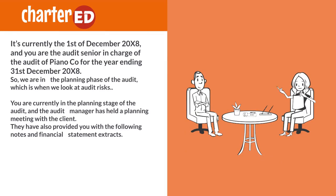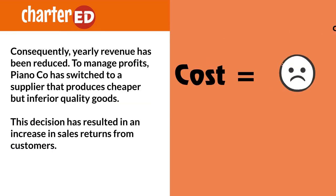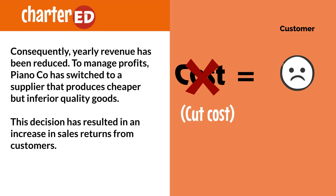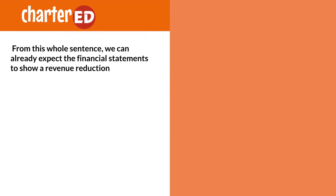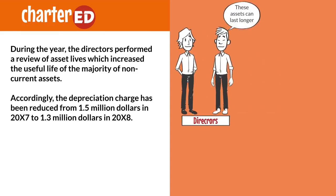This year the economy has affected Piano Co significantly, resulting in reduced sales prices. Consequently, yearly revenue has been reduced. To manage profits, Piano Co has switched to a supplier that produces cheaper but inferior quality goods. This decision has resulted in an increase in sales returns from customers. From this, we can already expect the financial statements to show a revenue reduction. The main thing we should be worrying about are the returns, which usually require a provision to be recognized.